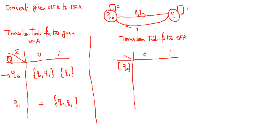The inputs are 0 and 1. Now check what happens on 0 applied to q0 in the NFA — you go to q0 and q1. This is a new combined state. On taking 1 on q0, you go to q1 only. So we have two new states generated: q1 (single state) and {q0, q1} (combined state).